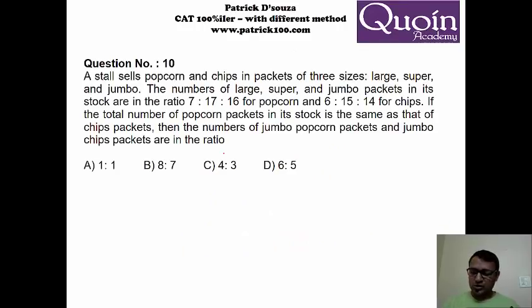Let's look at some of the questions. A stall sells popcorn and chips. We have three sizes large, super and jumbo. So they given the ratio. Popcorn ratio is large, super and jumbo, and chips ratio large, super and jumbo. They have also mentioned a total number of popcorn packets is same as the total number of chip packets. What we want is ratio of the jumbo popcorn packets and jumbo chip packets.